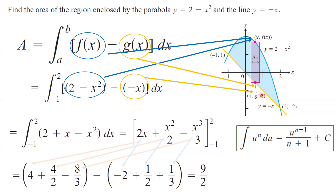So the area bounded between these two functions is 9 over 2. Note that we needed to know the lower and upper bounds — we found those by setting the two functions equal to each other and solving the algebra to get x equals negative 1 and x equals 2. To calculate the integral of this polynomial, we used the power rule: u to the n integrates to u to the n plus 1 divided by n plus 1. You plug in the upper bound, plug in the lower bound, and subtract — calculating the area for the top function minus the area for the lower function to find the area bounded between the two curves.